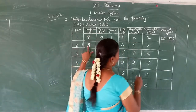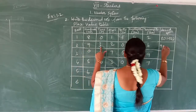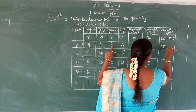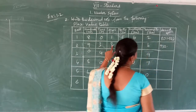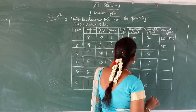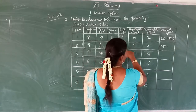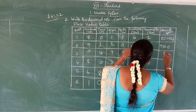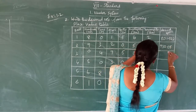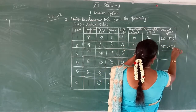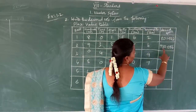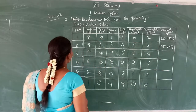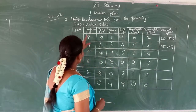In the hundreds place is nine, tens place is three, ones place is two. Point — now the decimal part: tenths place is zero, hundredths place is five, thousandths place is six. So nine hundred and thirty-two point zero five six — 932.056.